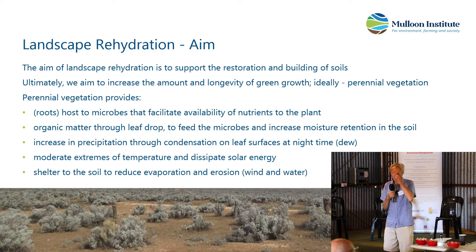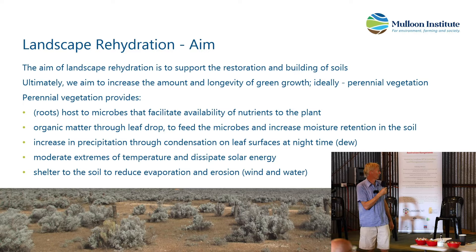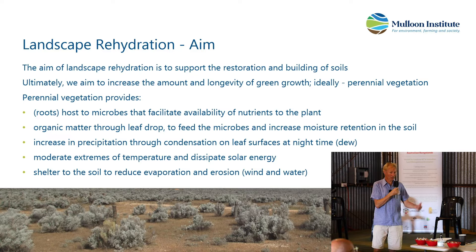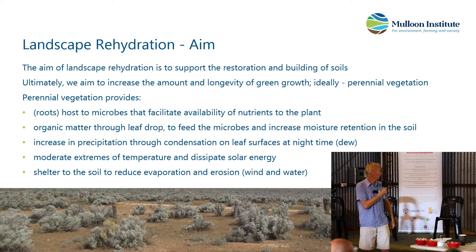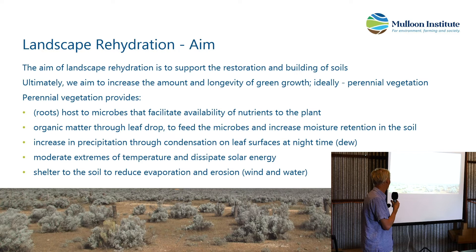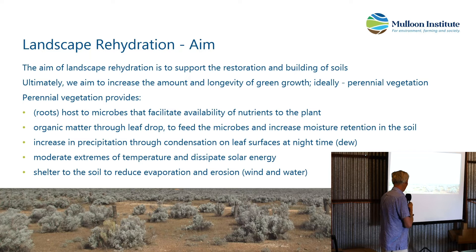So what are the aims of landscape rehydration? Basically, to support the restoration and building of soils. We try to increase the longevity of green growth, or preferably increase perennial vegetation. That vegetation provides roots that host microbes, which facilitate nutrients to the plants. We try to build organic matter through leaf drop, which also feeds those microbes and helps increase moisture retention in the soil. It increases precipitation through dew, moderates extremes of temperature, dissipates solar energy, and provides shelter to the soil, reducing evaporation and erosion — both wind and water.